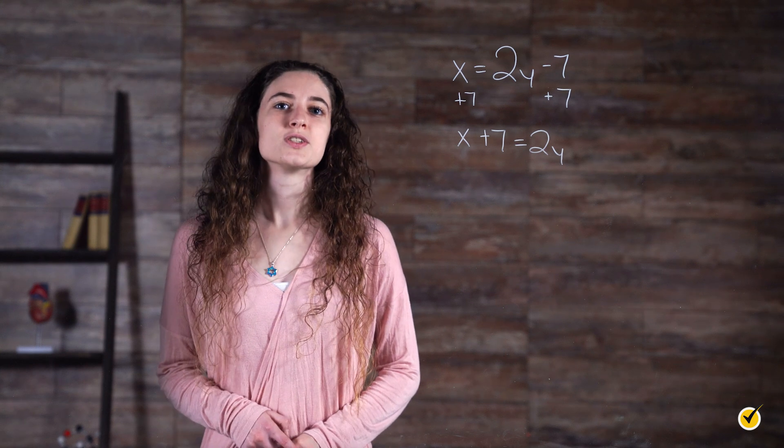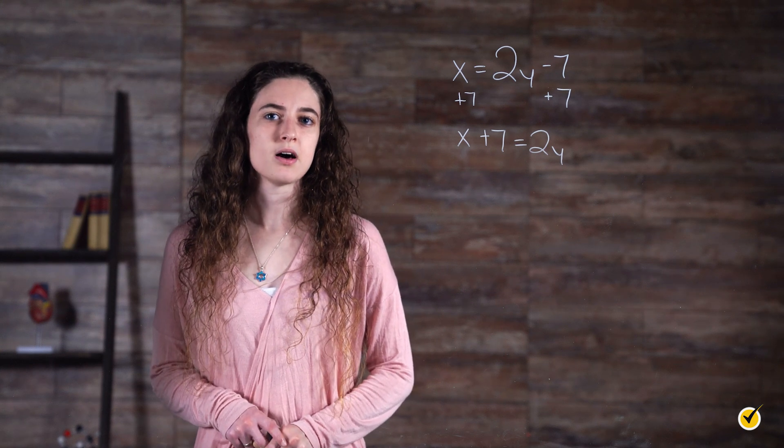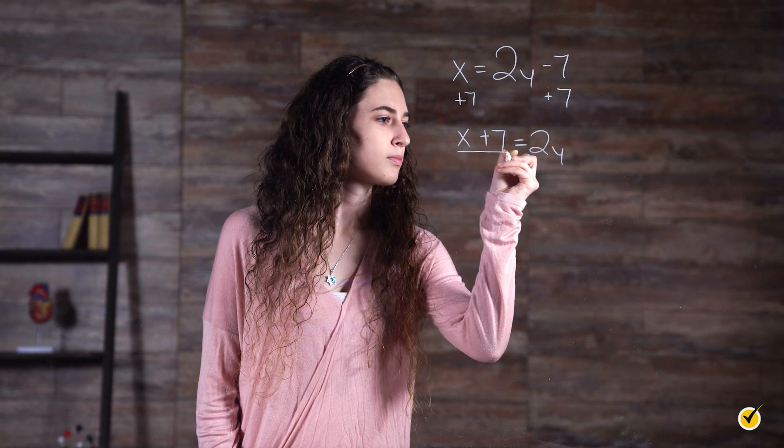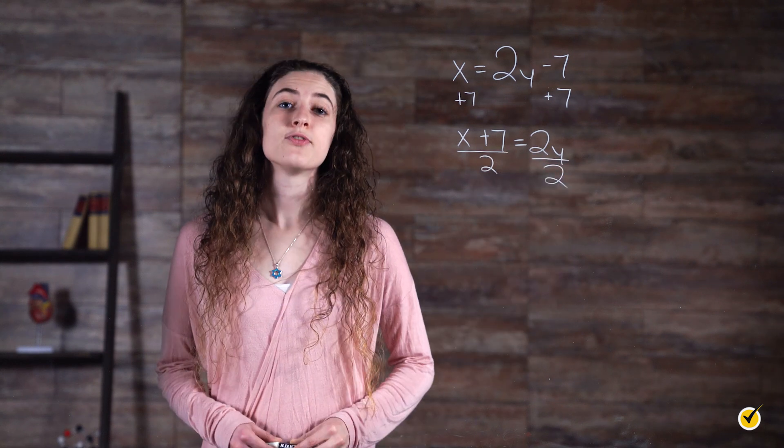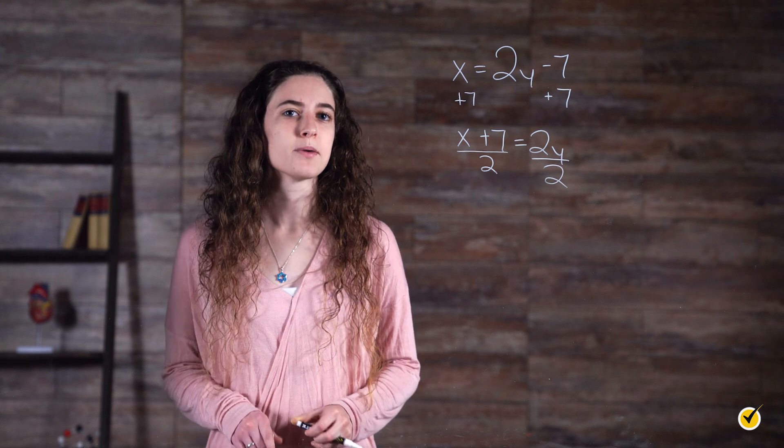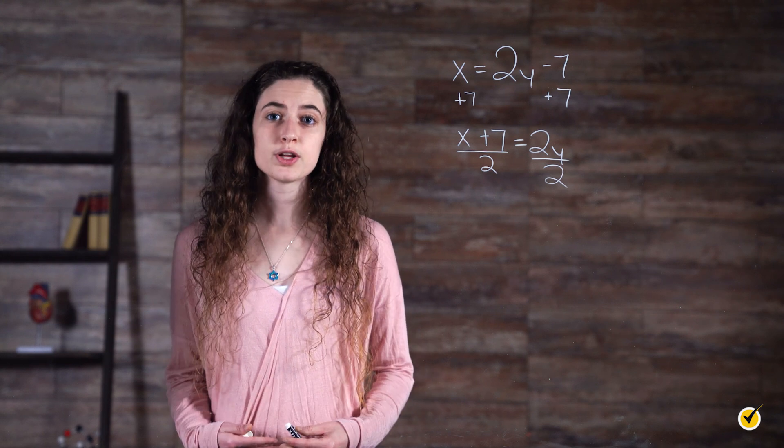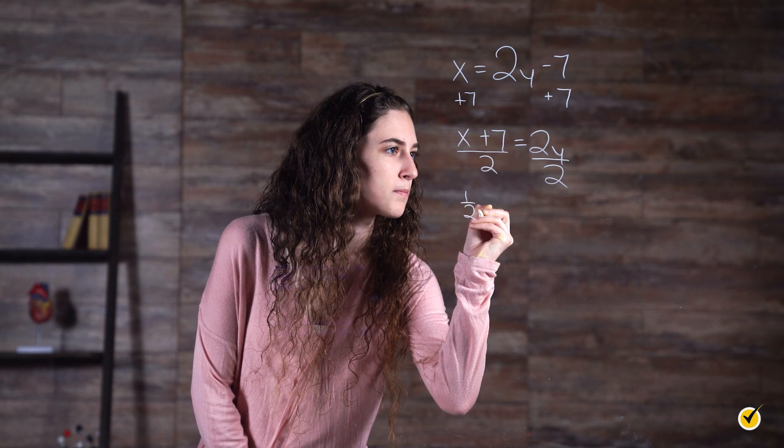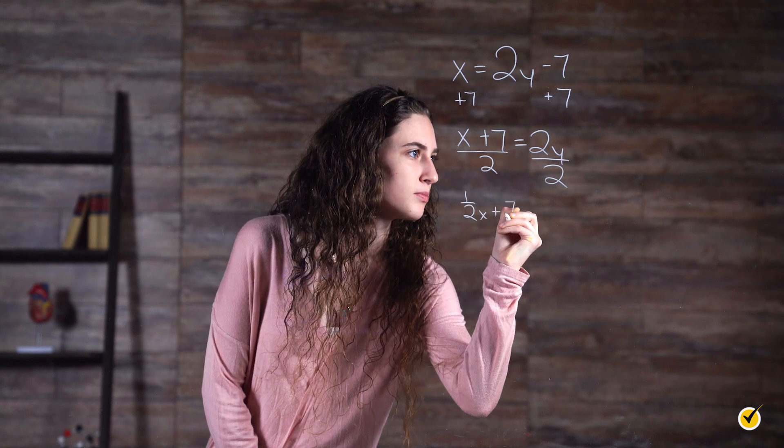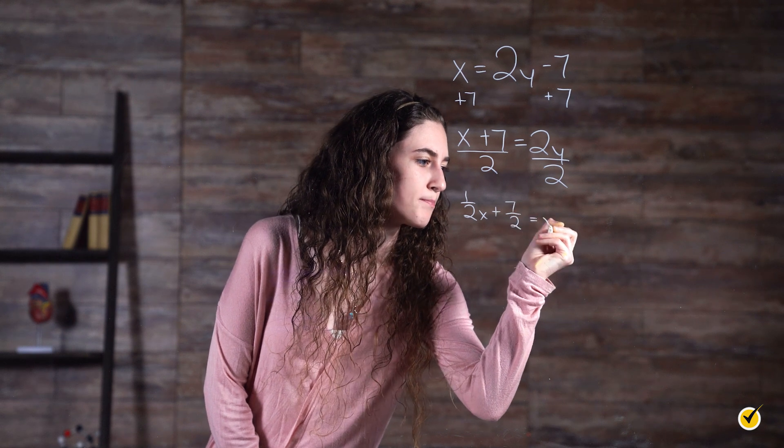Then, we divide by 2 to get y by itself. Remember, dividing by 2 is the same as multiplying by 1 half. So another way to write this equation is 1 half x plus 7 halves equals y.